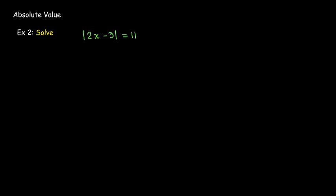Let's look at another example. In this case, I have a binomial 2x minus 3 inside the absolute value sign.